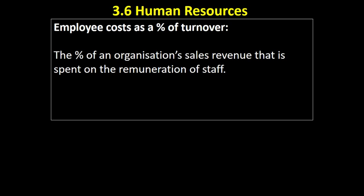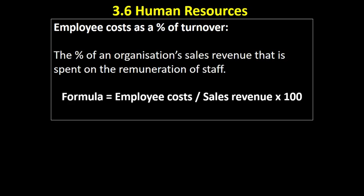Employee costs as a percentage of turnover is the percentage of an organisation's sales revenue — turnover is another word for sales revenue — that's spent on the remuneration of, that's spent paying, staff. The formula for it is employee costs divided by sales revenue times a hundred.